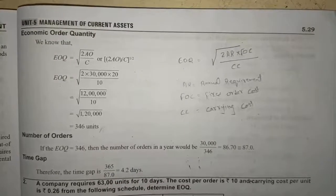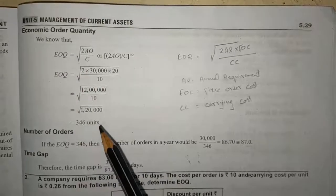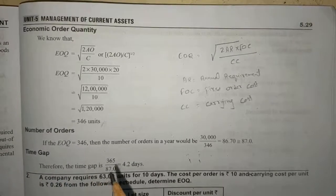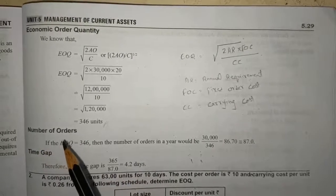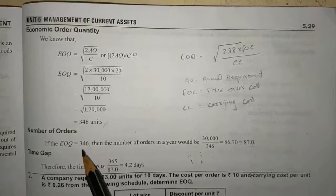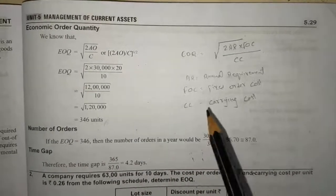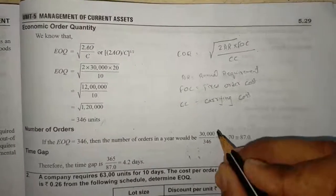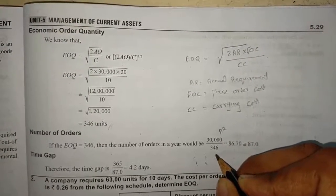The first question asked for economic order quantity, which we found. Now the second part asks about the number of orders. How many orders are to be placed if EOQ is 346 units? The number of orders in a year would be 30,000 (the annual requirement) divided by 346 (the EOQ). When we divide, we get approximately 87 orders.